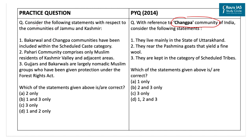The practice question says: consider the following statements with respect to communities of Jammu and Kashmir. The first statement says Bakarwal and Changpa communities have been included within the Scheduled Caste category. This is incorrect, as they have been included in the ST category, not SC. The second statement says the Pahari community comprises only Muslim residents of Kashmir valley and adjacent areas. This is also incorrect, as the Pahari community includes both Hindus and Muslims — it is essentially the language of the hills.